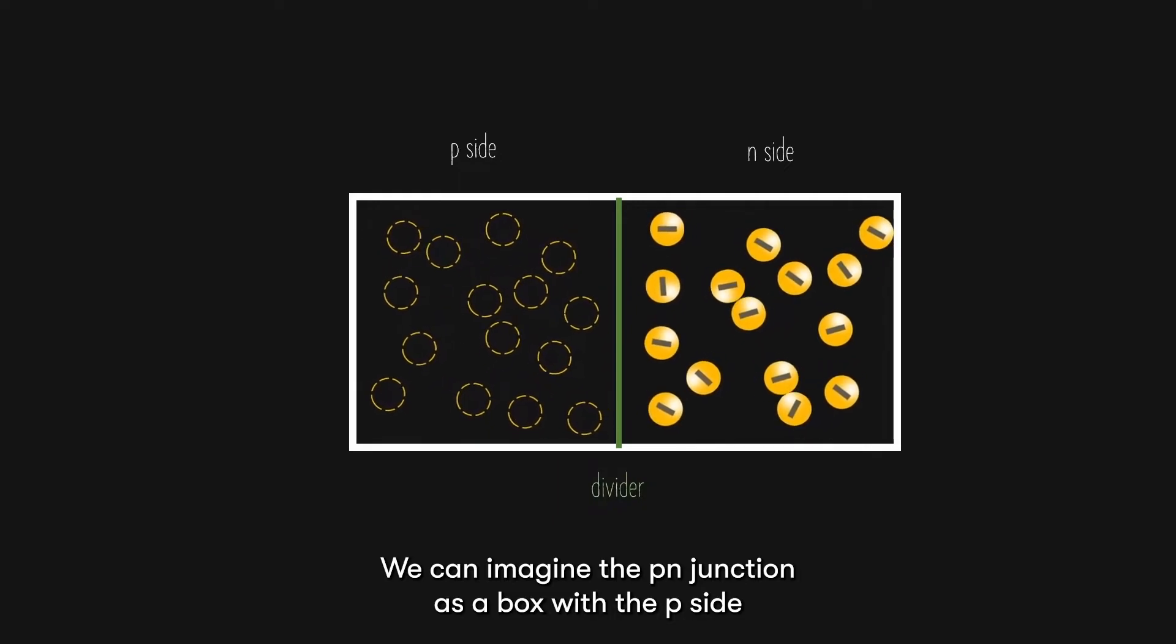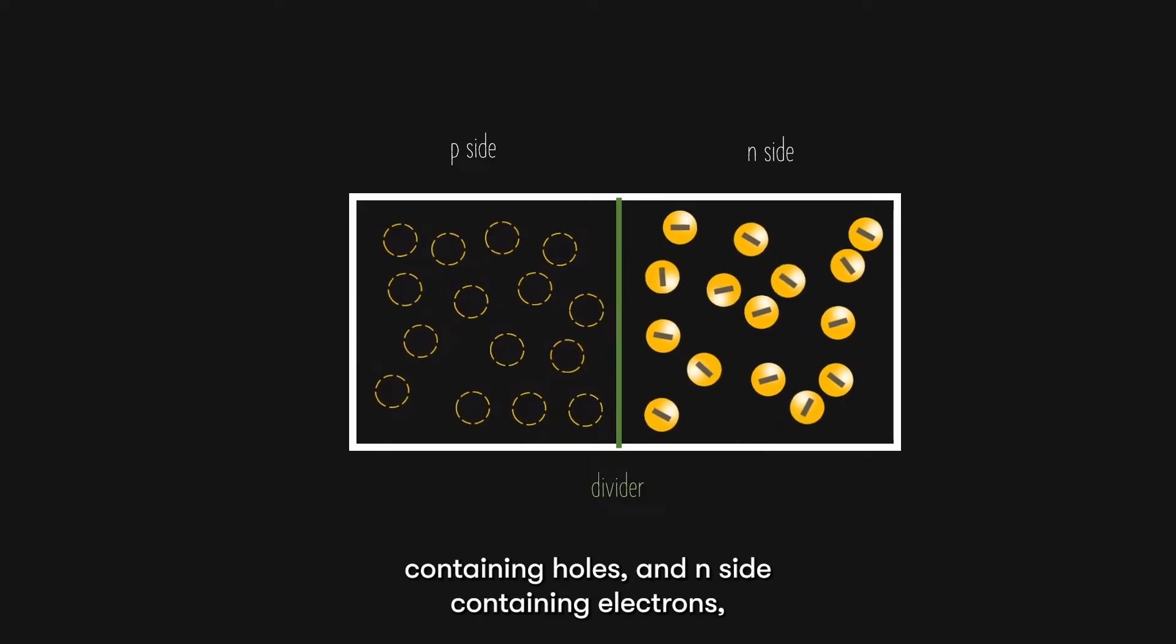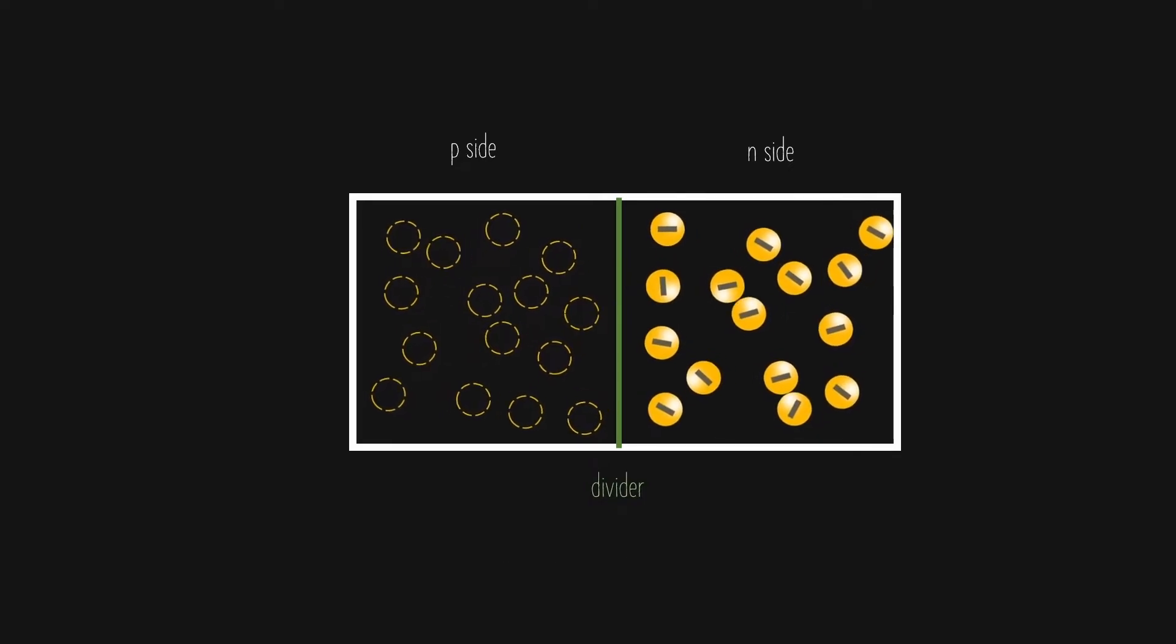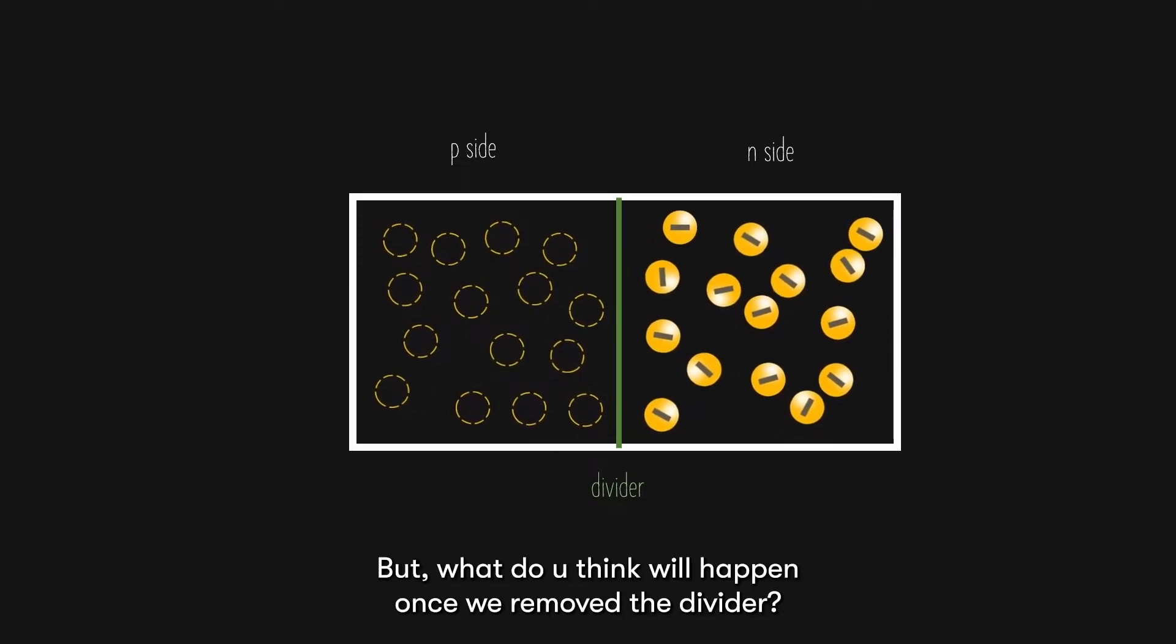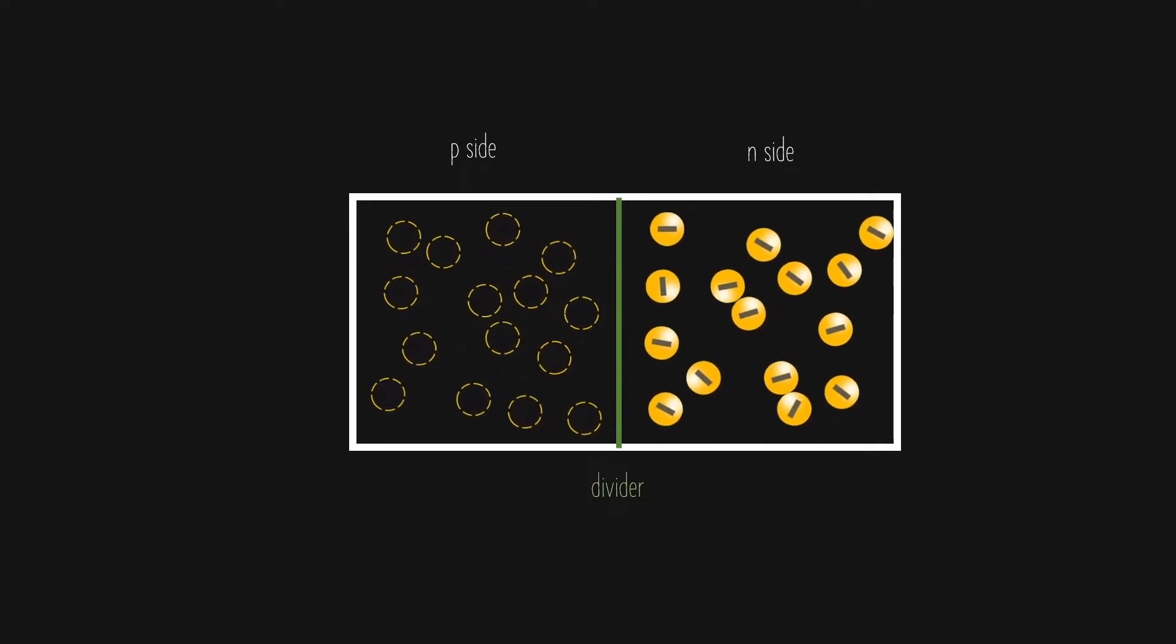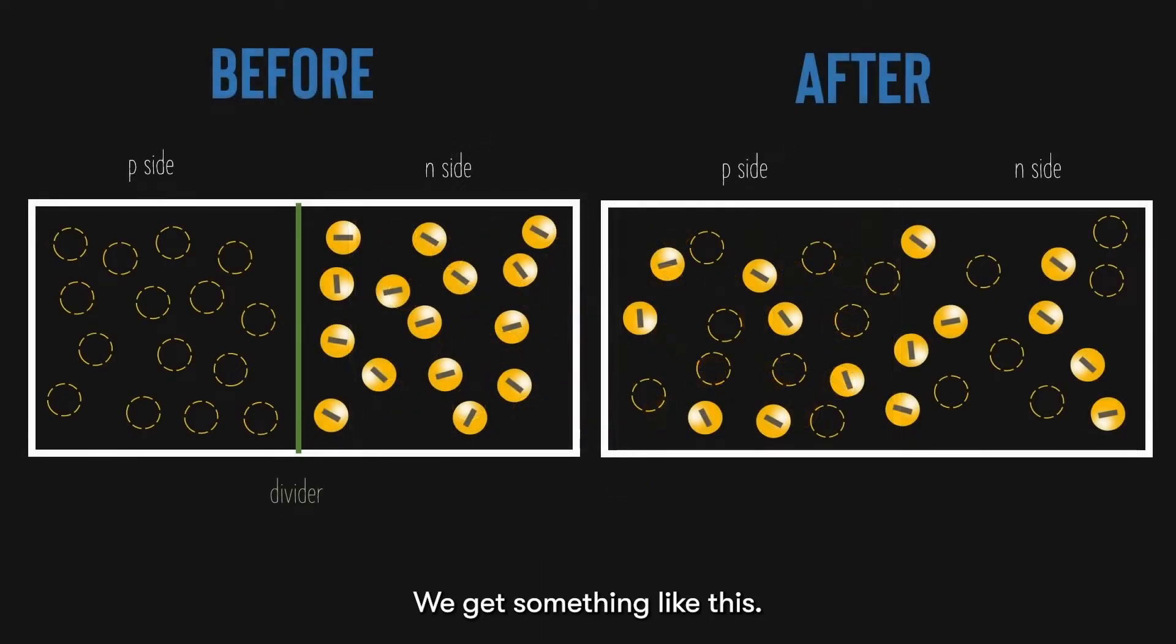I want to take a very visual and intuitive approach to explain how electrons and holes flow in the p-n junction. We can imagine the p-n junction as a box with the p-side containing holes and the n-side containing electrons, with a divider in between to separate them. For now, the p-side holes still do not know the existence of the n-side electrons. But what do you think will happen once we remove the divider?